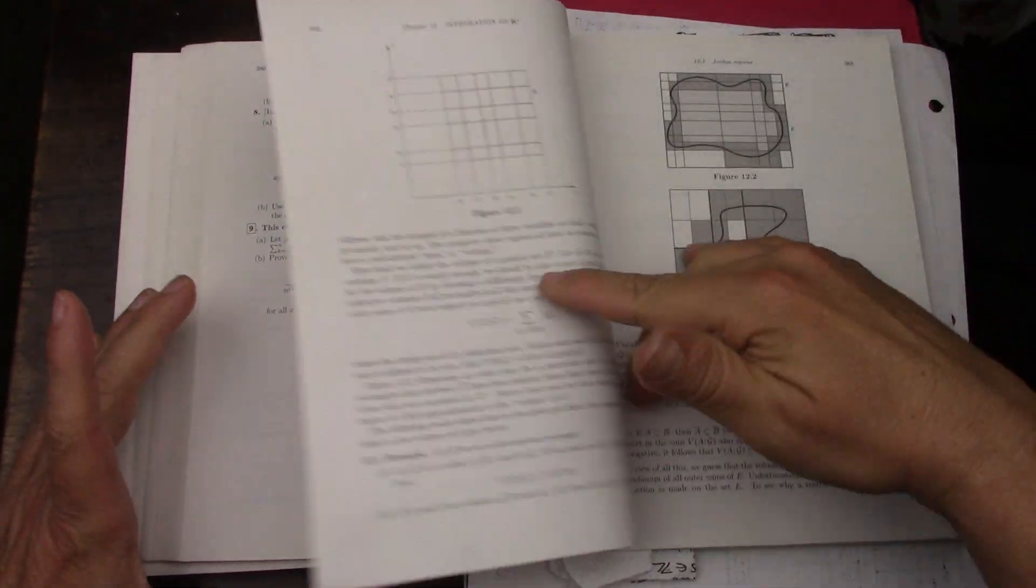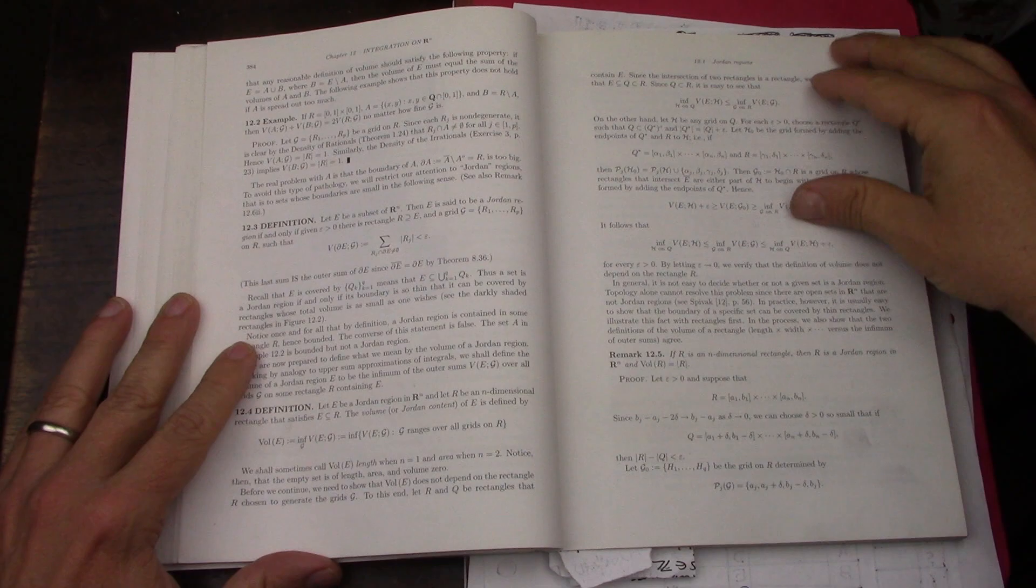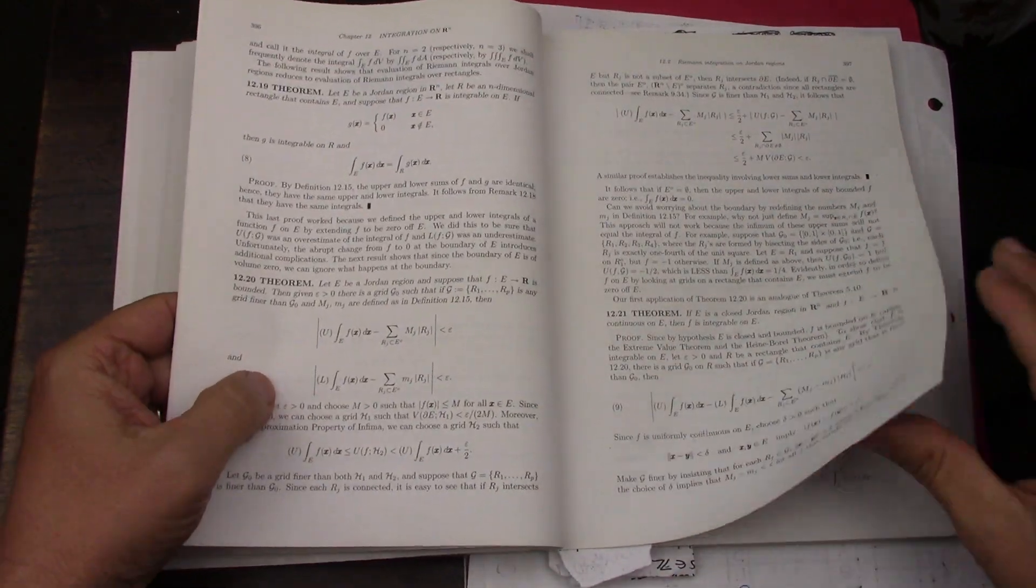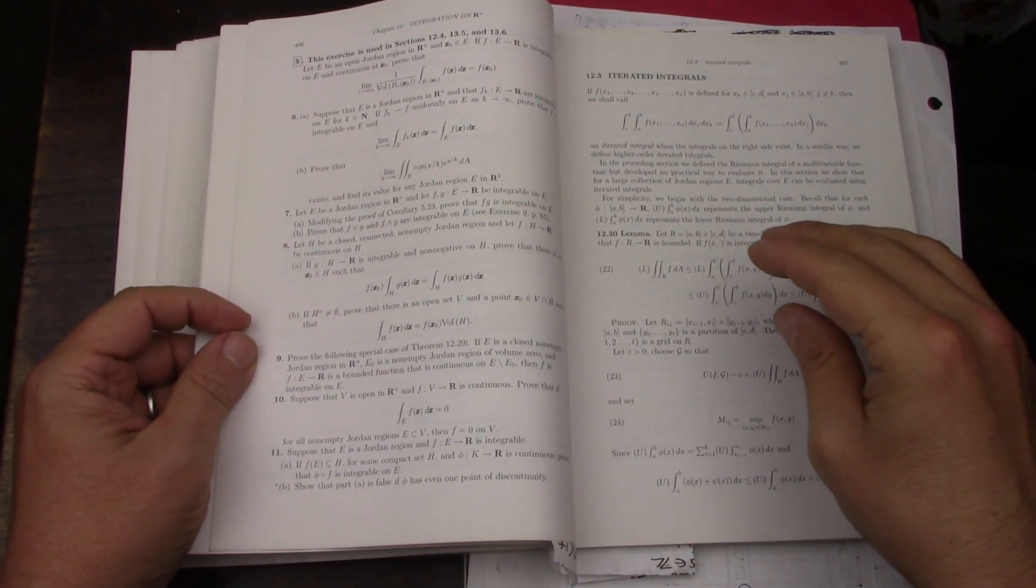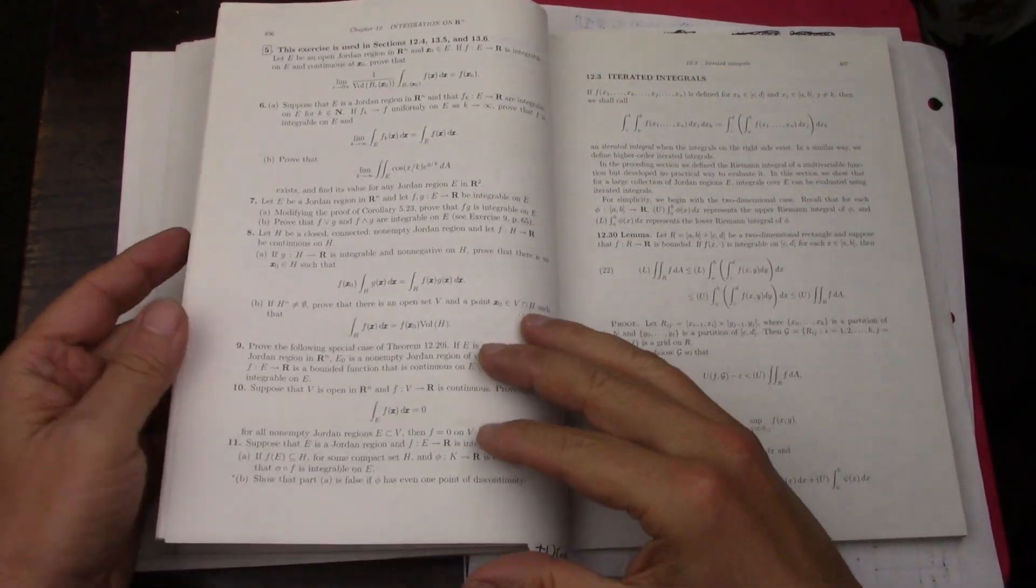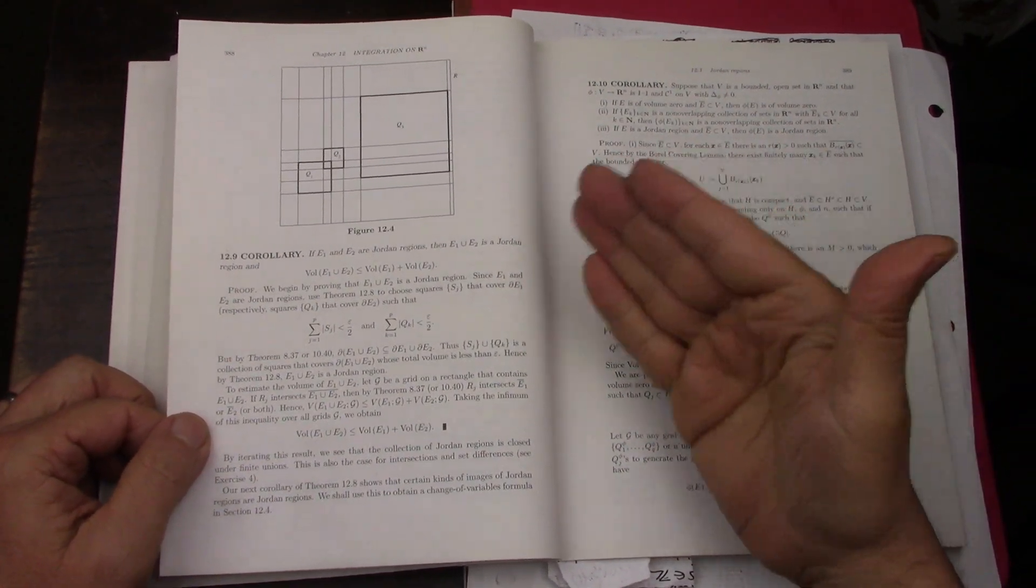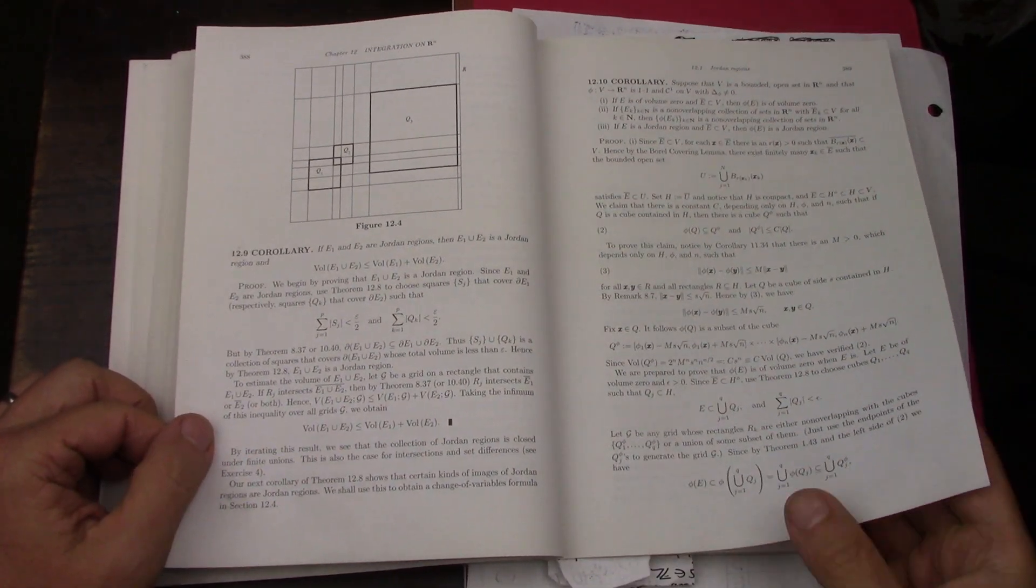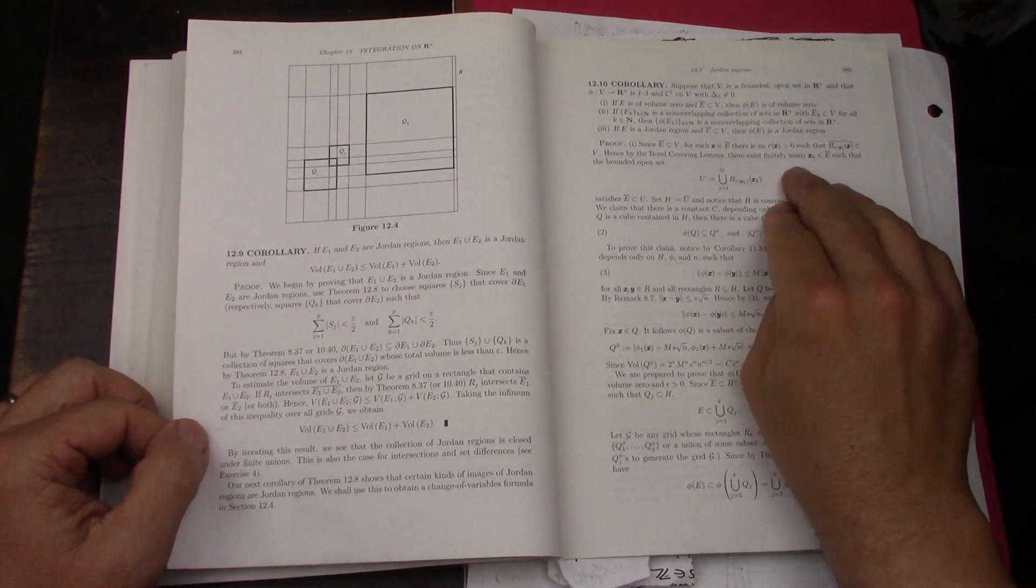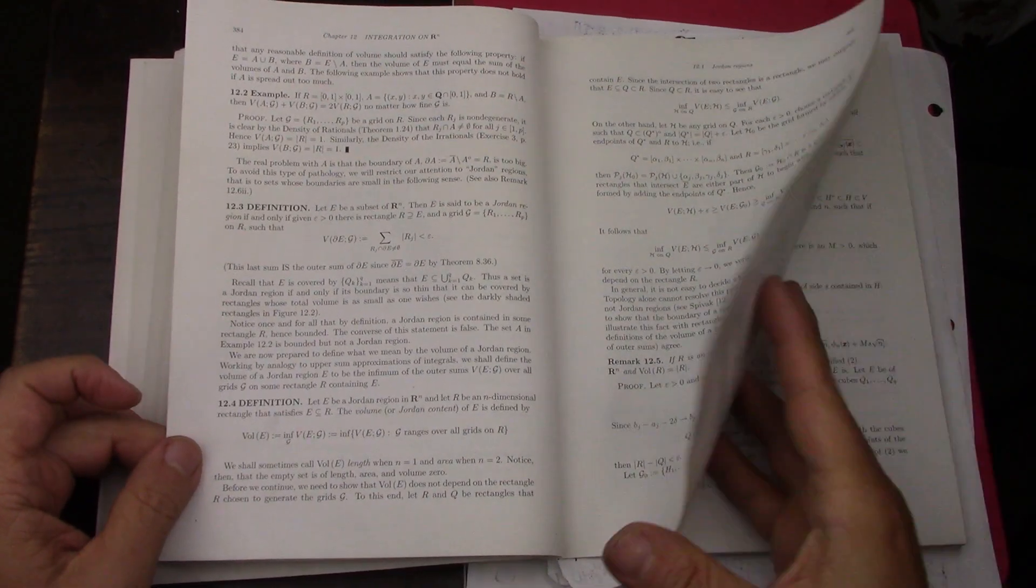When you go into a vector calculus book, they're never going to talk about Jordan regions. While later in the chapter I was able to take whatever integrals are being worked on and go back to a vector calculus book and understand a simpler way of seeing things, this material I'm kind of a hostage to Wade. When I look through other books, there's just very little mention of Jordan measure, Jordan curve, Jordan anything. That's what has made working on section 12.1 problems a bit of a struggle.